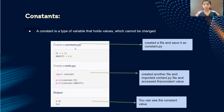After naming this as constant dot py, open a new file and give import constant. So this file will get imported and now if you're giving print constant dot pi and constant dot gravity, the output will be the values which we had assigned, which is 3.14 and 9.8.